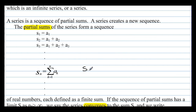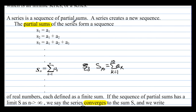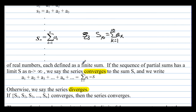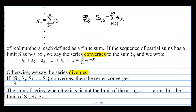For example, s sub 10 is equal to the sum from k equals 1 to 10 of a sub k. The partial sums of the series form a sequence of real numbers, each defined as a finite sum. If the sequence of partial sums has a limit s as n approaches infinity, we say the series converges to the sum s. Otherwise, we say the series diverges. So we're looking at the values of the sums, not of the individual terms.